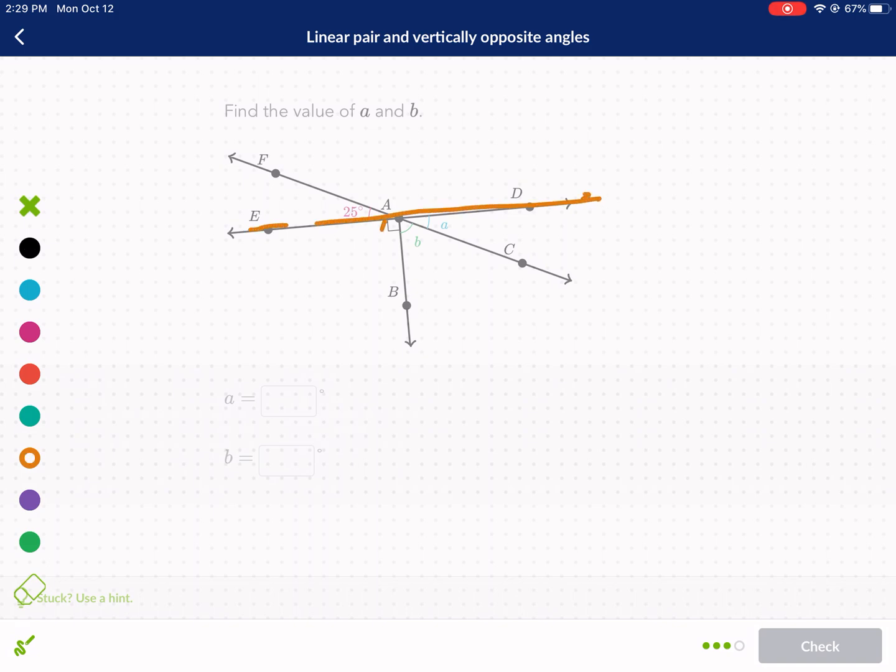Okay, so what I was doing here, we have this 90-degree angle plus B plus A is going to be equal to 180. But we first have this vertical angle here. A is vertical to 25. So we need that first.